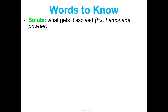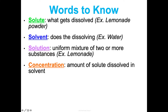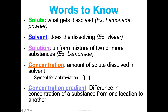A few vocabulary words: a solute is what gets dissolved, the solvent does the dissolving, and the solution is the uniform mixture of the two. Think of solute as lemonade powder, solvent as water, and the solution as the actual lemonade. Concentration is the amount of solute dissolved in the solvent, and we use brackets to abbreviate the word concentration. Highly concentrated lemonade has a ton of lemonade powder — really sour and strong. Low concentration means low solute, so it would be really watery. The gradient is the difference in concentration between two locations, and that's what drives passive or active transport.